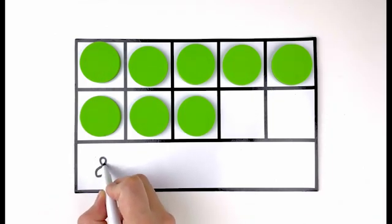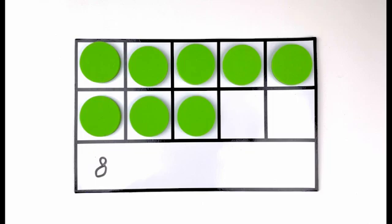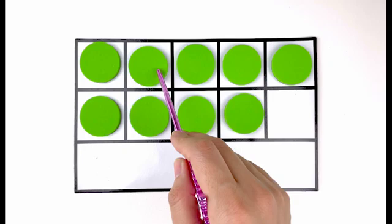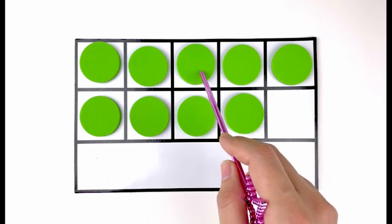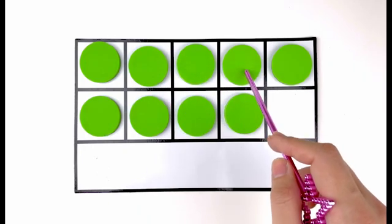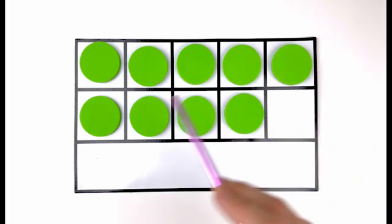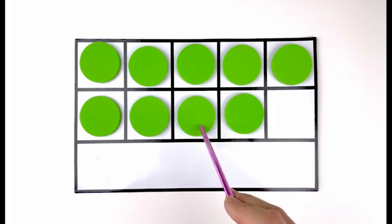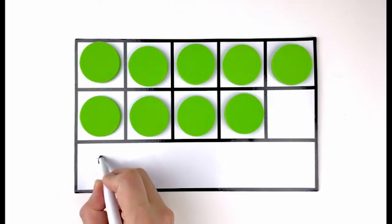Let's write down number eight. Let's add another one. How many green circles do you see this time? One, two, three, four, five, six, seven, eight, nine. Nine green circles. Number nine.